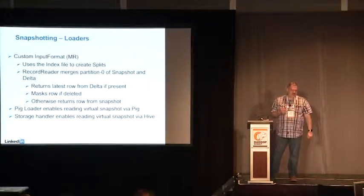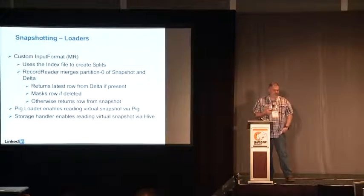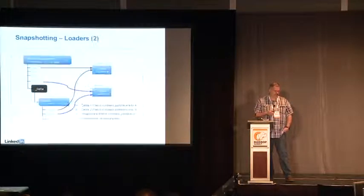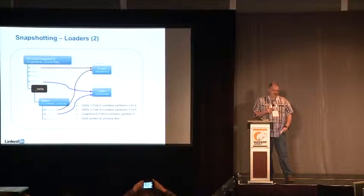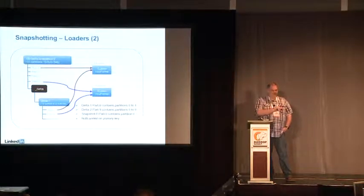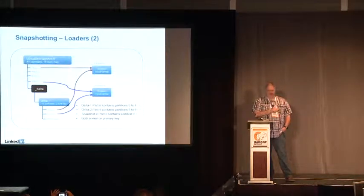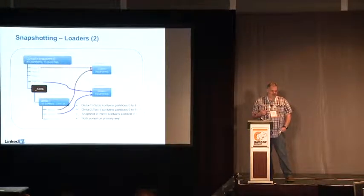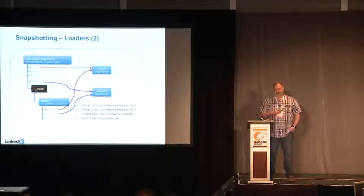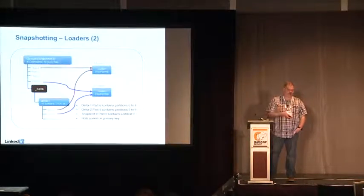We've created loaders for standard MapReduce, a Pig loader, and a storage handler for Hive. The loader reading partition zero would read partition zero out of the delta directory. The index file tells it exactly what to read. Mapper nine would read partition nine — and actually partition five from the delta file — since the index file indicates it contains partitions five through nine.